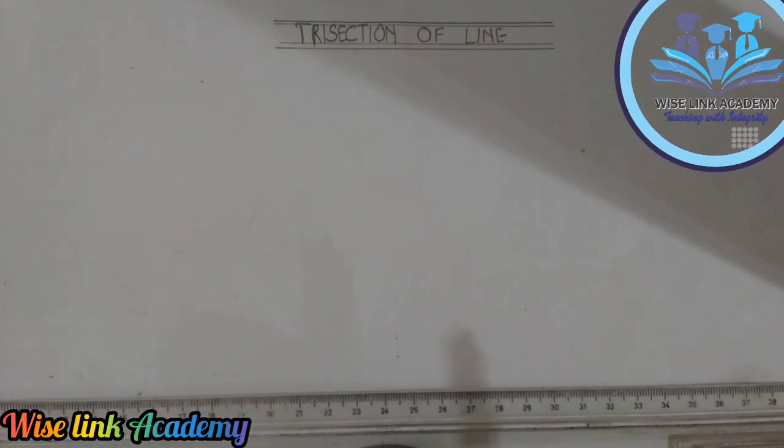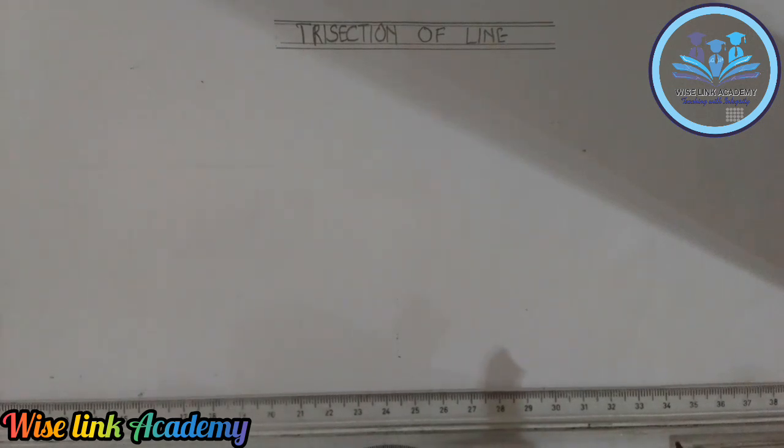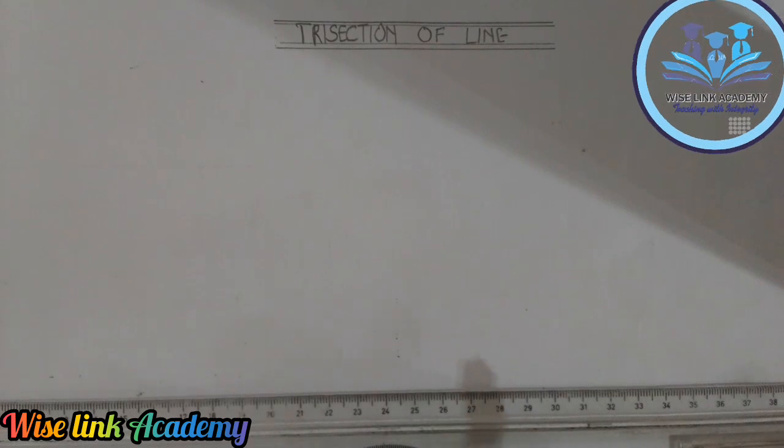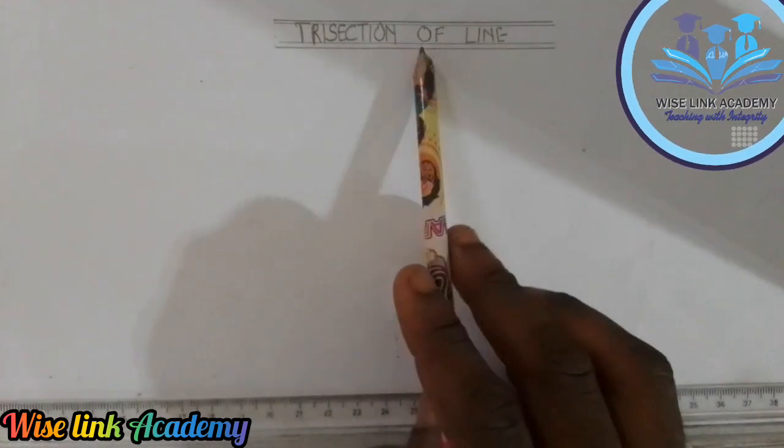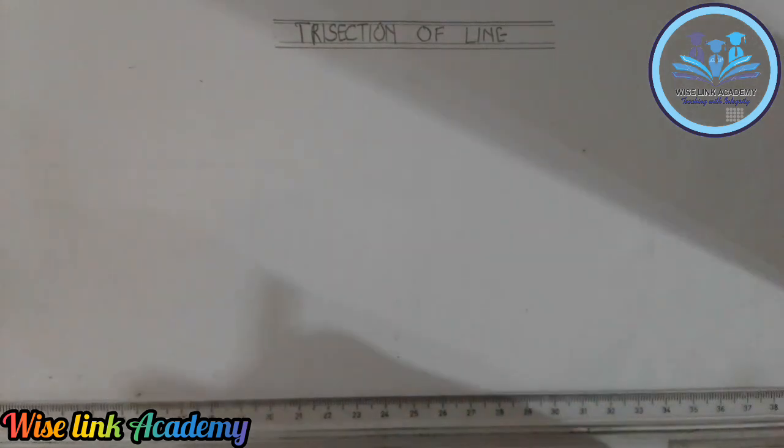Good day everyone, welcome to Wiselink Academy. Today I'm going to be learning how to divide a line into three equal parts. That is trisection of line, simply means dividing a line into three equal parts.